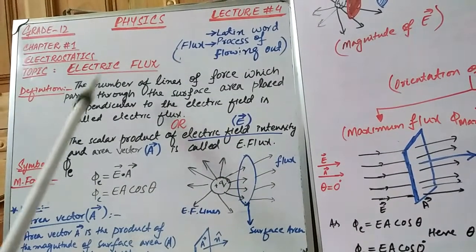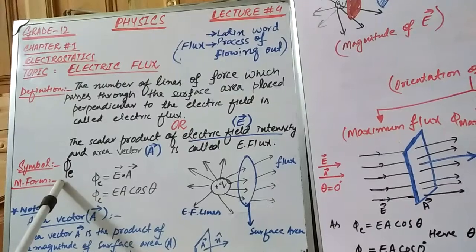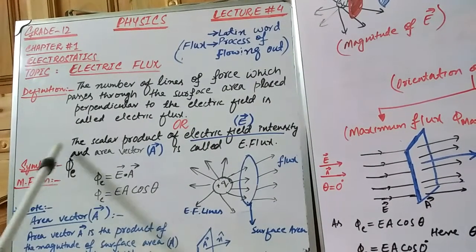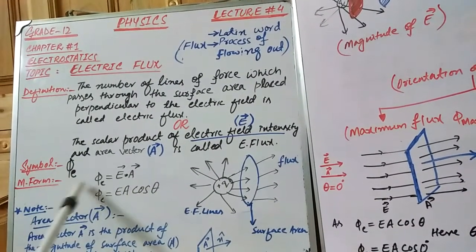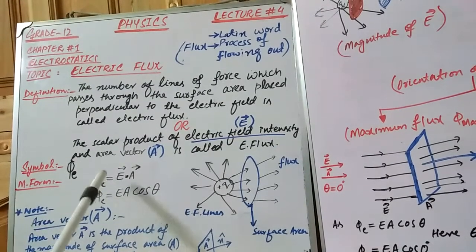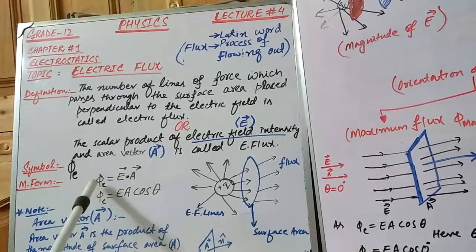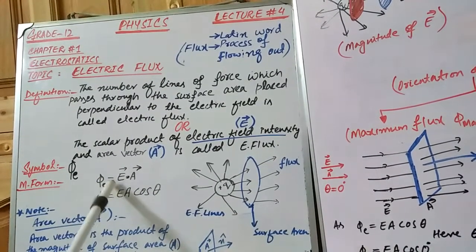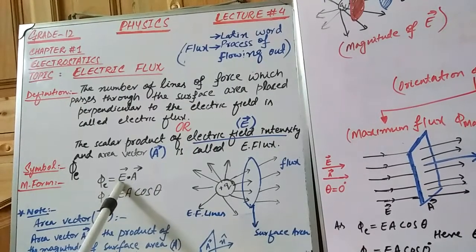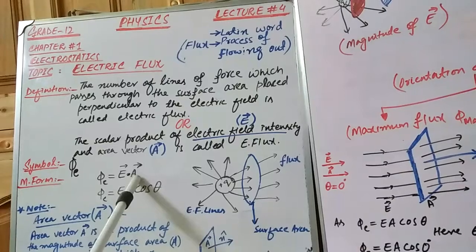Symbolically, electric flux is represented by φ_E, where φ represents flux and E represents electric, so on the whole electric flux is represented by φ_E. Mathematically, electric flux is written as the dot product of electric field intensity E and area vector A.